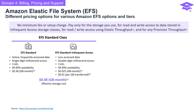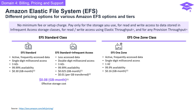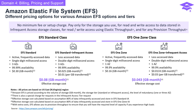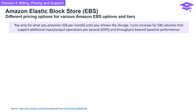EFS Standard-Infrequent Access is ideal for less accessed data with double-digit millisecond access time, also across three availability zones. The EFS One Zone class is tailored for active, frequently accessed data with single-digit millisecond access time in a single availability zone. EFS One Zone-Infrequent Access suits less accessed data with double-digit millisecond access time in a single availability zone. Amazon EBS is cost-effective because you only pay for what you provision.